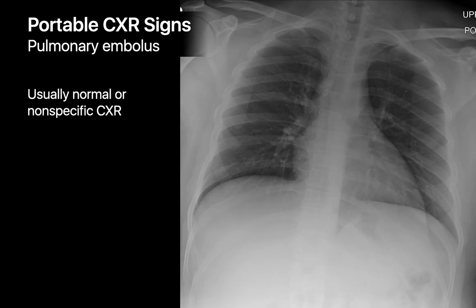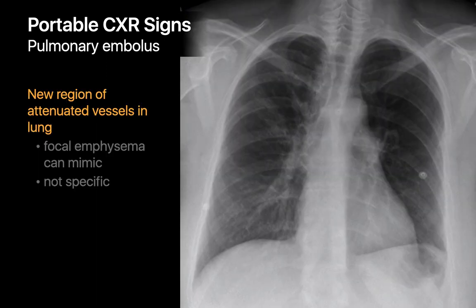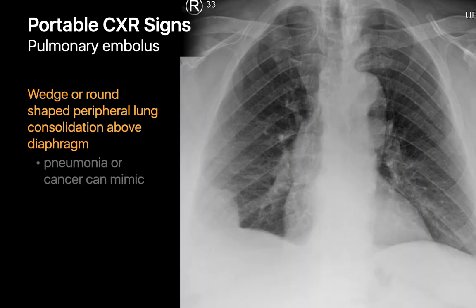When a patient has a PE, most of the time their chest x-ray will appear unchanged from prior or normal. Perhaps you will see a very small pleural effusion, which is also a very non-specific finding. Occasionally, if a PE is large enough, you might notice a lung region where pulmonary vessels appear newly attenuated compared to a prior chest x-ray, but this is a subtle and non-specific finding most often caused by overpenetration due to technique or focal emphysema. If the PE has caused a large enough pulmonary infarct, you might see a new focal peripheral lung opacity, though this too is non-specific and much more often caused by focal lung infection, pneumonia, or cancer.